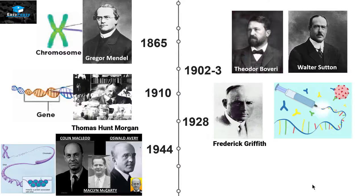Then in 1944, three different scientists named Colin MacLeod, Maclyn McCarty and Oswald Avery discovered that it is actually the DNA that is transferring from one bacteria to the other. What they did was repeat the experiment done by Frederick Griffith, as they knew the composition of bacteria.